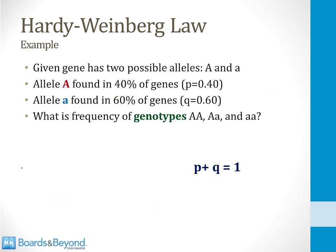To make this more clear, let's go through an example. Let's assume that a given gene has two possible alleles, which we'll denote as capital A and lowercase a. Let's suppose we know that allele capital A is found in 40% of genes — we'll denote this as the variable p, equal to 0.4. Then allele lowercase a must be found in the remaining 60%, because there are only two possible forms of this gene. We'll denote the frequency of allele lowercase a as q, equal to 0.6. This brings us to one of the first principles of the Hardy-Weinberg law: for a gene with only two alleles, p plus q must equal 1.